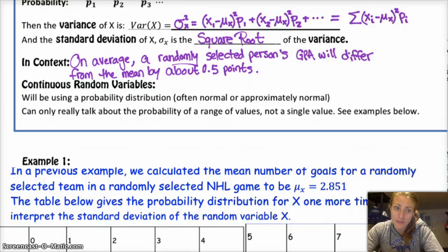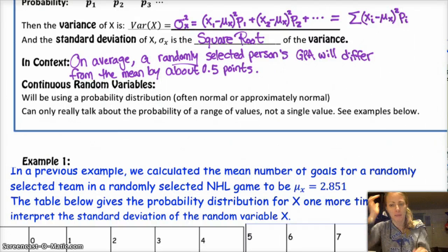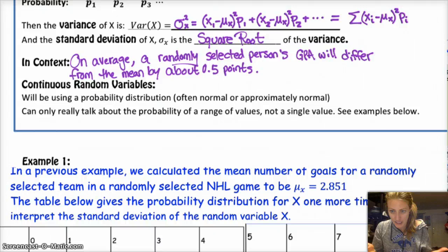So for a continuous variable, we can really only talk about the probability of a range of values. If it's discrete, you can say okay, what's the probability of rolling a 6? Right? Because your options are 1, 2, 3, 4, 5, 6.